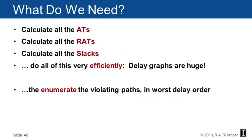We need to calculate all the arrival times (ATs), all the required arrival times (RATs), and all the slacks — very efficiently, because these graphs are gigantic, really enormous. We also have to figure out how to enumerate the violating paths in worst delay order. The delay graph and some mechanics on it will let us do all of this.